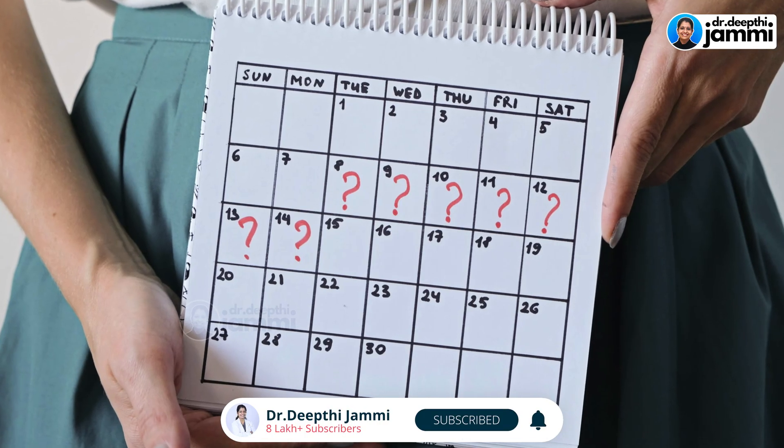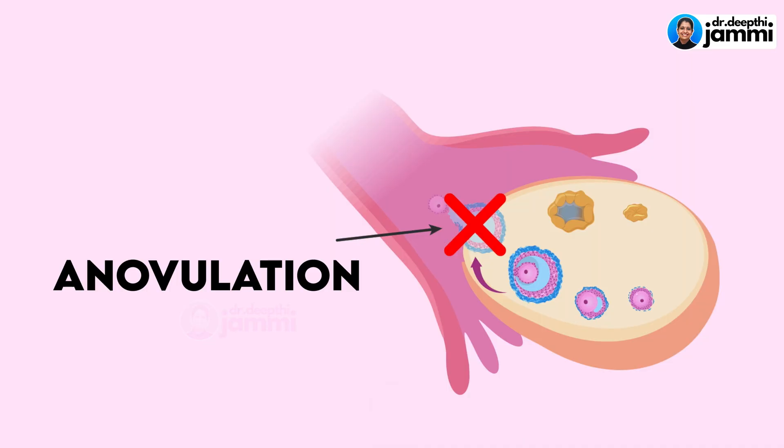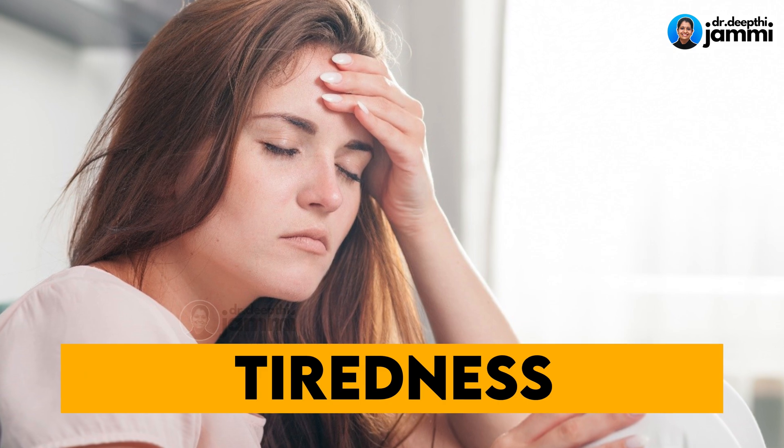In hypothyroidism, TSH levels can be irregular, leading to irregular periods. Ovulation is reduced, which makes conception difficult. Other features of hypothyroidism include weight gain and persistent fatigue.